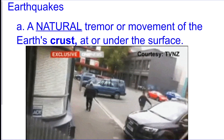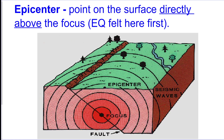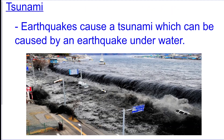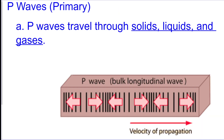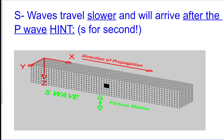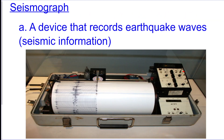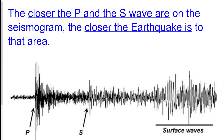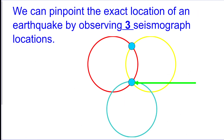An earthquake is a tremor. The epicenter is the point above where the earthquake happened. Tsunamis can happen from earthquakes — get to high ground or evacuate. P waves can travel through solid, liquid, and gas and are the first to arrive. S waves are slower and arrive second. A seismograph measures and detects P and S waves. The closer the P wave and S wave are on the seismogram, the closer the earthquake was to that station.